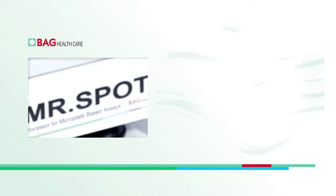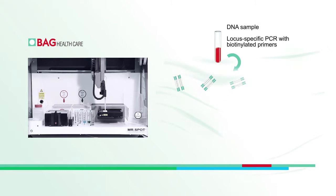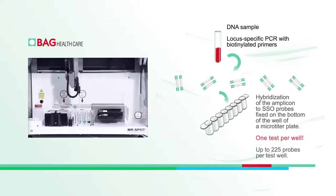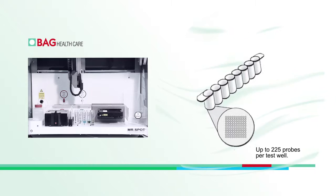The DNA sample is first amplified in a locus-specific PCR with biotinylated primers, for the gene HLA-A for example. The resulting amplicon is then placed in a test well for hybridization. The bottom of the test well contains probes matching the amplified gene. One HLA test with up to 225 probes is performed in each test well.